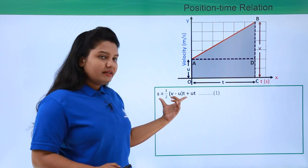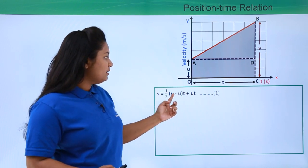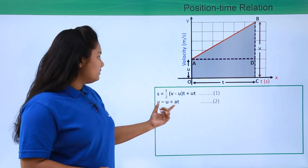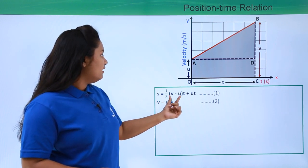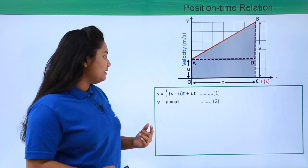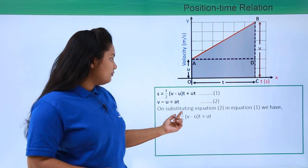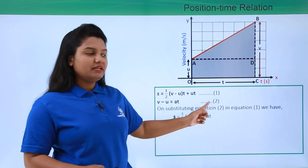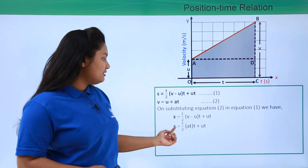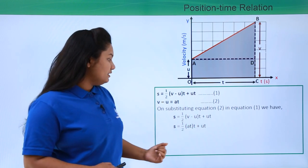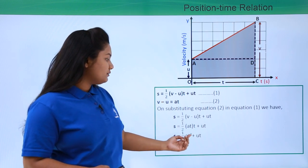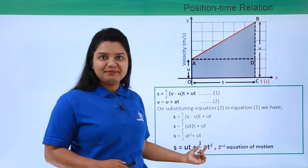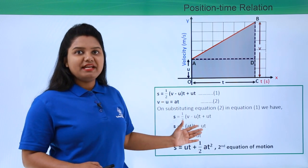Our equation 1 is s equals half times (v minus u) times t plus ut. On substituting v minus u from equation 2 into equation 1, we replace (v minus u) with at. So s equals half times at times t plus ut, which gives s equals half at squared plus ut. Rearranging the terms, we get s equals ut plus half at squared — this is our second equation of motion.